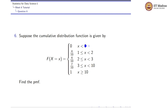Suppose the cumulative distribution function is given by this function: it is 0 for x less than 1, 4/10 for 1 ≤ x < 2, 4/10 for 2 ≤ x < 3, 7/10 for 3 ≤ x < 10, and equals 1 for x greater than or equal to 10.